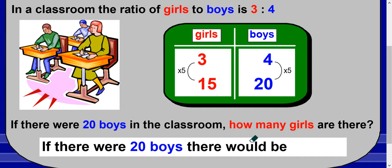Make sure you answer it properly: if there were 20 boys, there would be 15 girls.